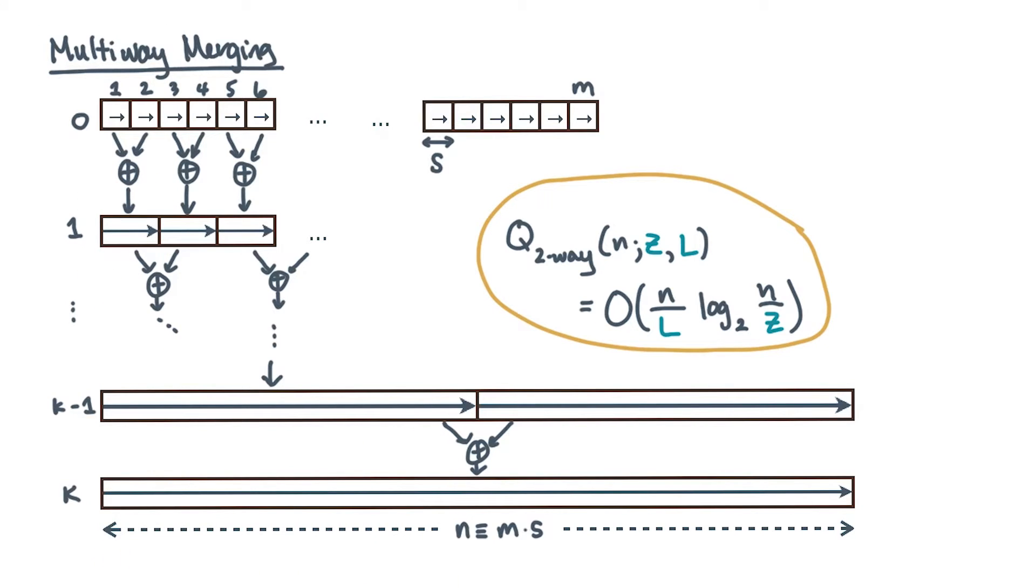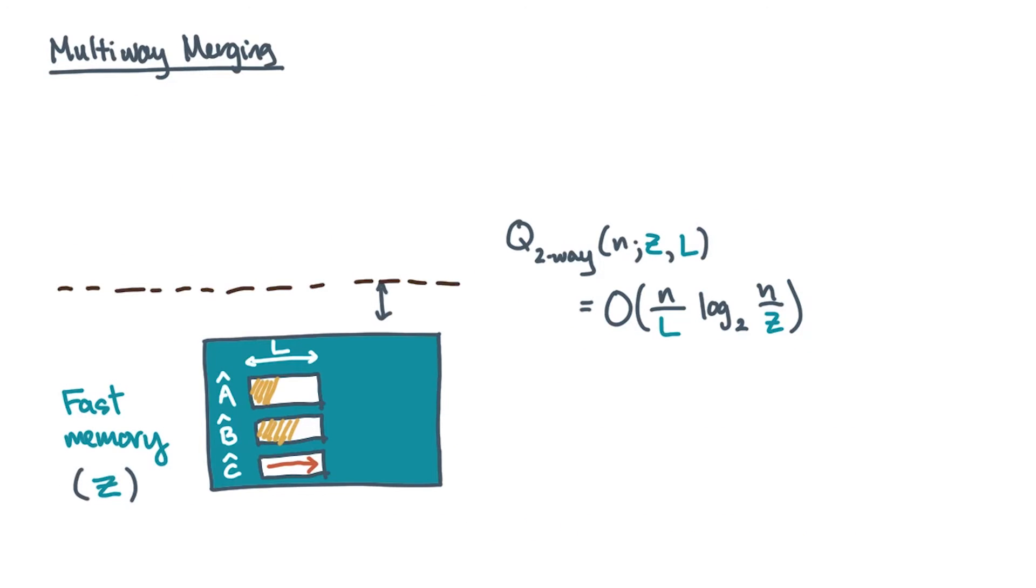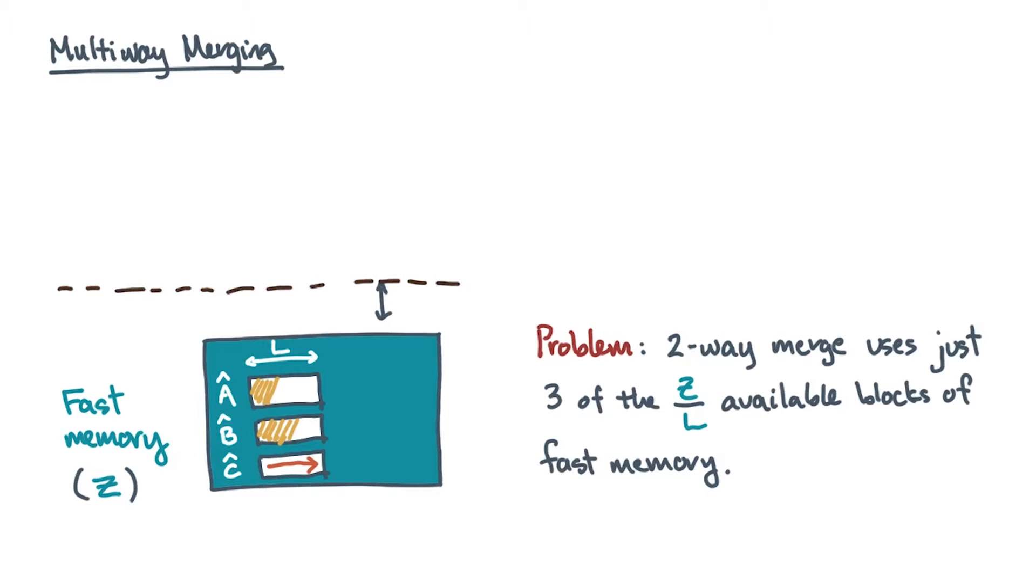One problem with two-way merging is that it doesn't really use fast memory to its fullest potential. Remember how merging in fast memory works? At any point in time, it uses very little of the available fast memory space. In fact, it uses just three L-sized blocks. There's one block for each of A and B, and one block for the output C. So, can you do better?